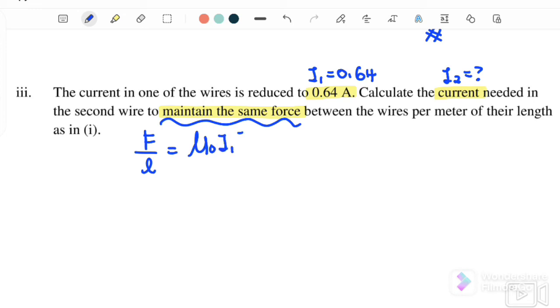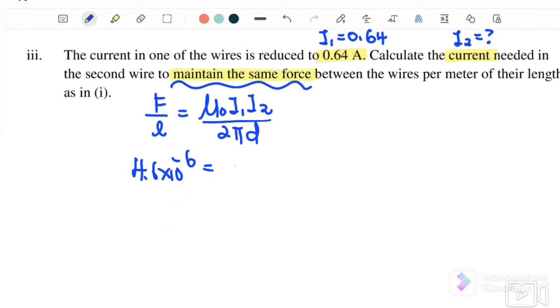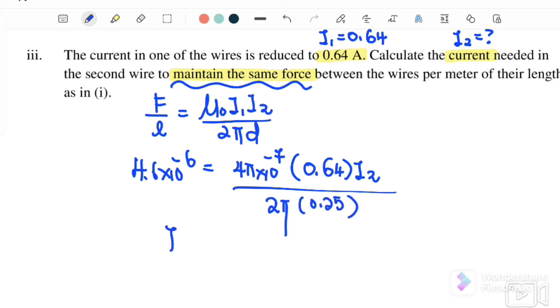Similar, we will still use force per unit length equals mu naught i1 i2 over 2 pi d, where F over l, because the question already mentioned maintain the same force, so just now our force is 4.6 times 10 to the negative 6, equals to mu naught 4 pi times 10 to the negative 7, i1 is 0.64, so we need to find i2, over 2 pi d. D is 0.25. So i2 needed in the second wire is equal to 8.98 amperes.